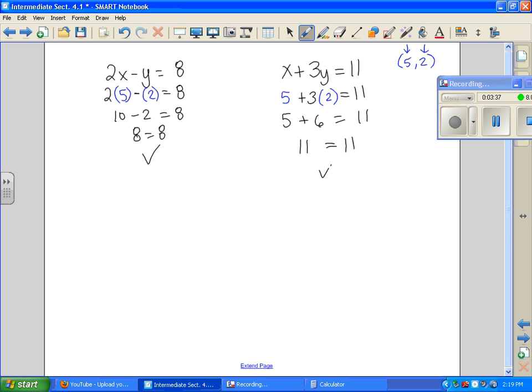Since both my ordered pair solution, when I plugged it back into equation 1, it was true. When I plugged it back into equation 2, it was true. It checked. I am confident that the ordered pair (5, 2) is a solution to my answer.